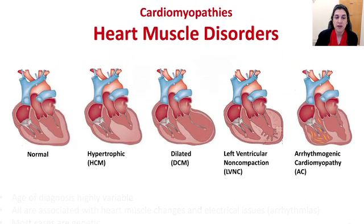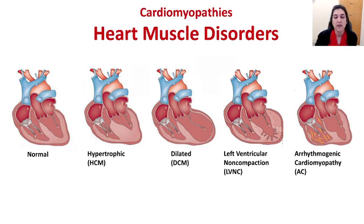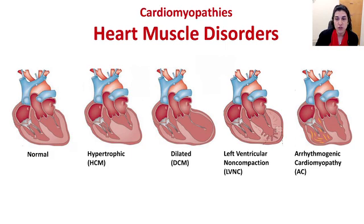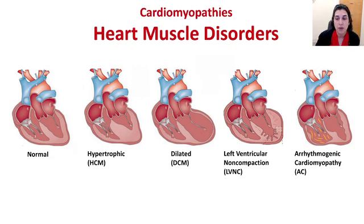Hypertrophic cardiomyopathy involves thickening or hypertrophy of the left ventricle, typically the left bottom chamber of the heart. Dilated cardiomyopathy involves thinning of the heart muscle and dilation or enlargement of the ventricular cavity. Non-compaction cardiomyopathy involves muscle trabeculations or lacy formations of the heart muscle, usually towards the tip of the heart, resulting in dysfunction of its squeeze capabilities. Arrhythmogenic cardiomyopathy typically involves the right ventricle, though our understanding has expanded to include both ventricles.